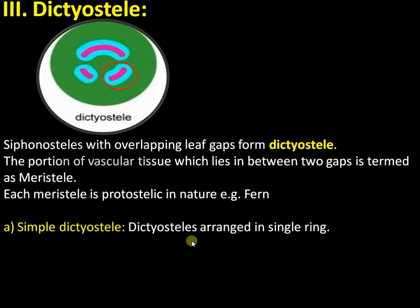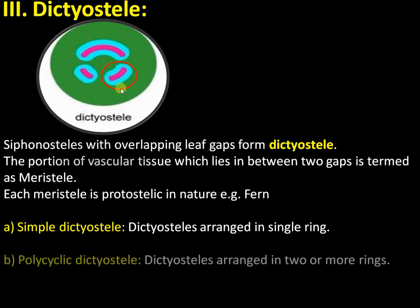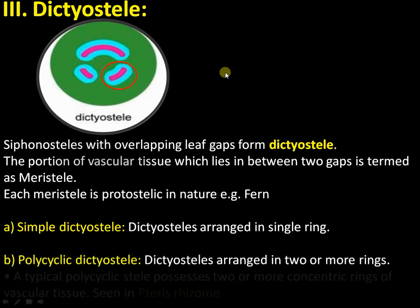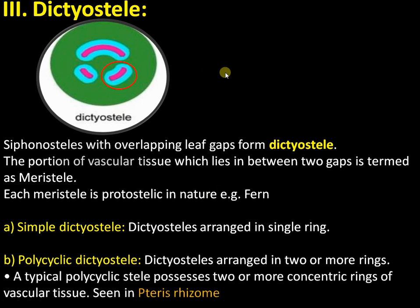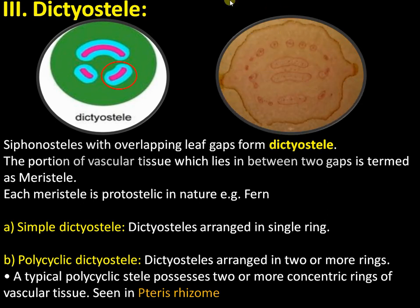Dictyostele can be a simple dictyostele, where meristeels are arranged in a single ring, or a polycyclic dictyostele, where different meristeels are arranged in different concentric rings, present in fern rhizome. You can see different rings in the figure, and each one is called a meristele, which is protosteelic in nature.